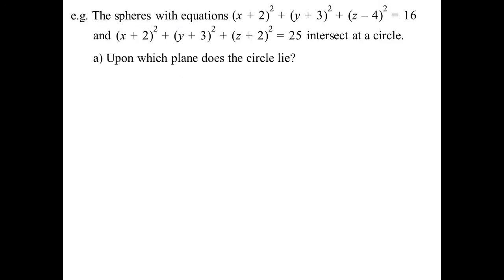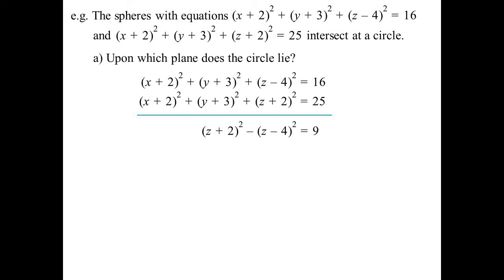We've got two spheres. They intersect at a circle. So if you think you're getting two spheres and overlapping each other, that point of intersection or that shape you get on the intersection would end up being a circle. Upon which plane does the circle lie? Okay, let's solve them simultaneously. You'll notice the nice numbers that have been chosen for this. So, oh look, I can eliminate the x plus 2 squared straight away, the y plus 3 squared straight away, and I just get z plus 2 squared minus z minus 4 squared equals 9.